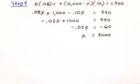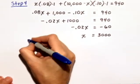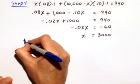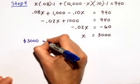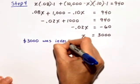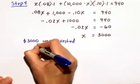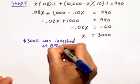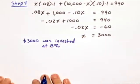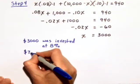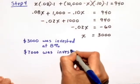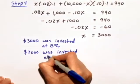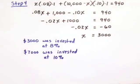Now, remember, in step 1, I let x equal the amount invested at 8%. So what I can say is, since x is equal to 3,000, 3,000 was invested at 8%. And then I have to take 10,000 and subtract 3,000, and I'll get a total of 7,000 was invested at 10%.